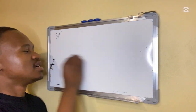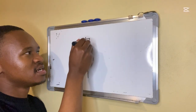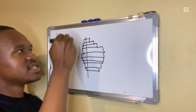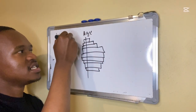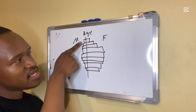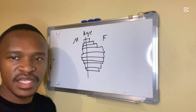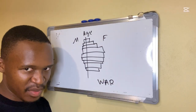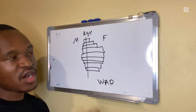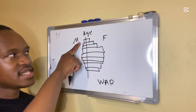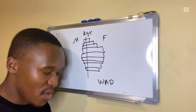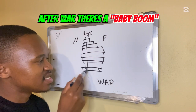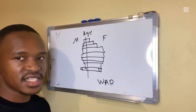Population pyramids can change for various reasons. For example, a pyramid might show fewer males and more females — this can represent a country's population during times of war, when men go to war and die. After the war, you may find the birth rate increasing again as men return. This shows how population pyramids reflect historical and social events.